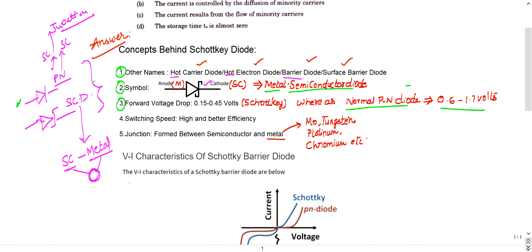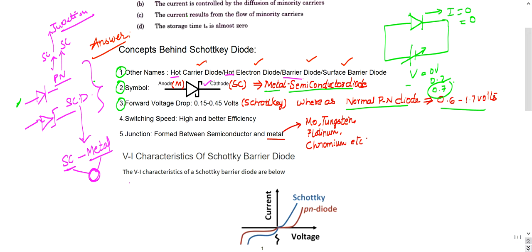Forward voltage drop is the voltage at which the diode begins to conduct — when non-zero current flows. If you give 0 volts, current is zero; at 0.2 volts, current is still zero; at 0.7 volts for silicon you get a small current. For the Schottky diode, this forward voltage lies between 0.15 to 0.45 volts, compared to 0.6 to 0.7 volts for silicon PN junction.